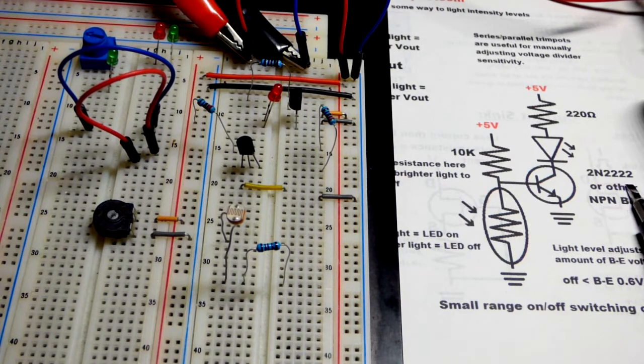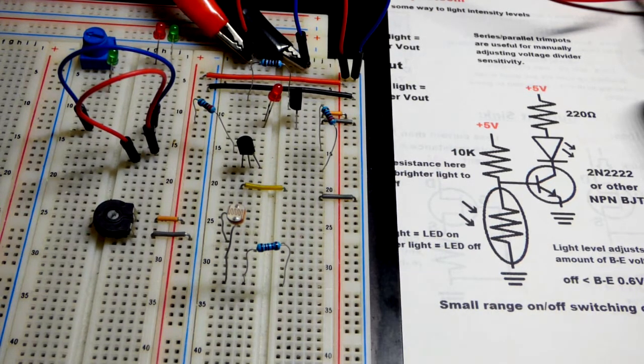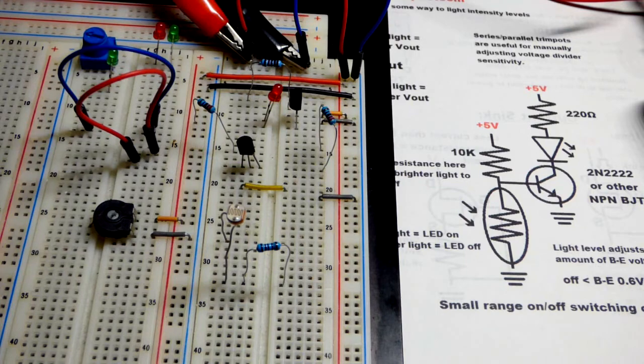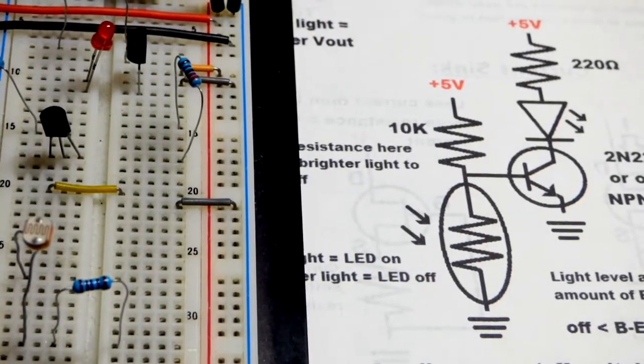We're not going to use the 2N2222, we're using the 2N3904. I'm going to start using that one more often, but I drew this data sheet when I used the 2N2222. The circuit's going to work exactly the same, so it's no big deal. The pin layout is even exactly the same.